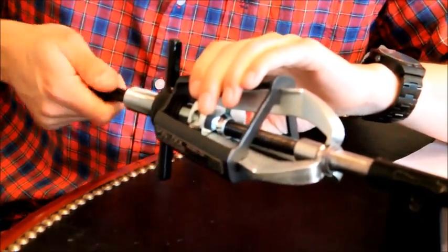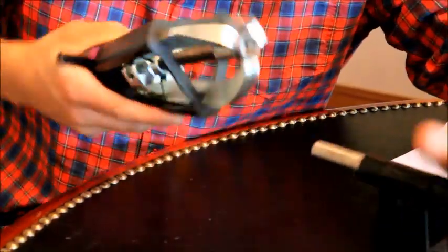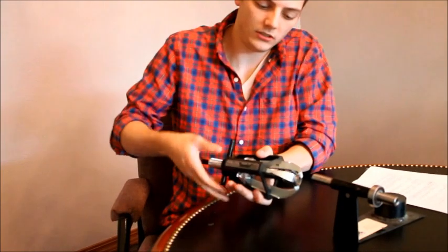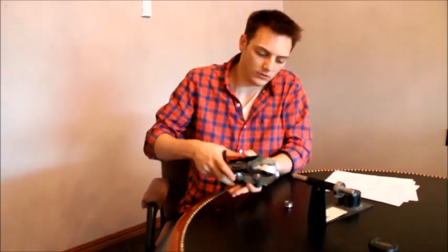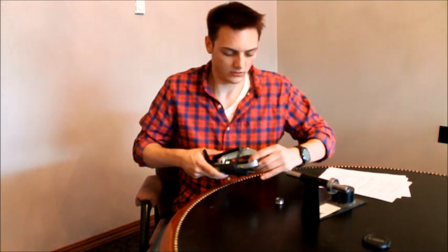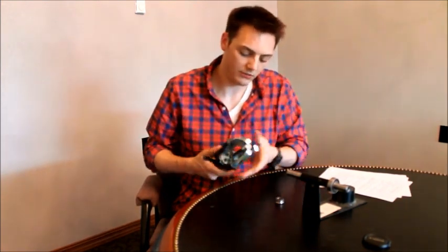Then once you get close to the edge, it just comes right off. And then you just loosen the T-handle again and the object falls off. Take the protective tip off and everything.